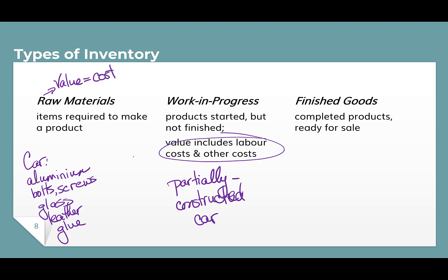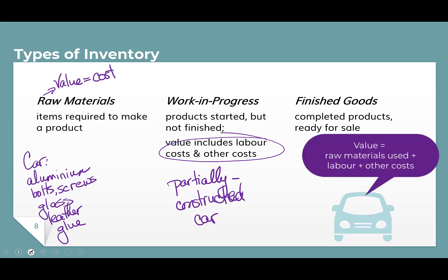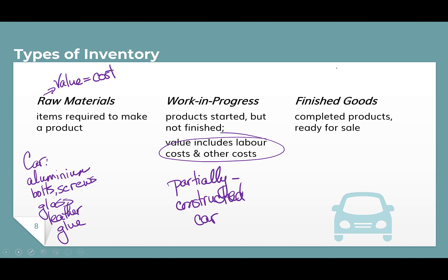The final category is finished goods — these are the completed products or goods that are ready for sale, so this is the actual car coming off the assembly line, ready to sell to a customer. Those are the three categories of inventory for a manufacturer. For retailers, all of their inventory is finished goods — whether it's clothes, food, or even wrapping paper, it's a finished good, and so that is their inventory.